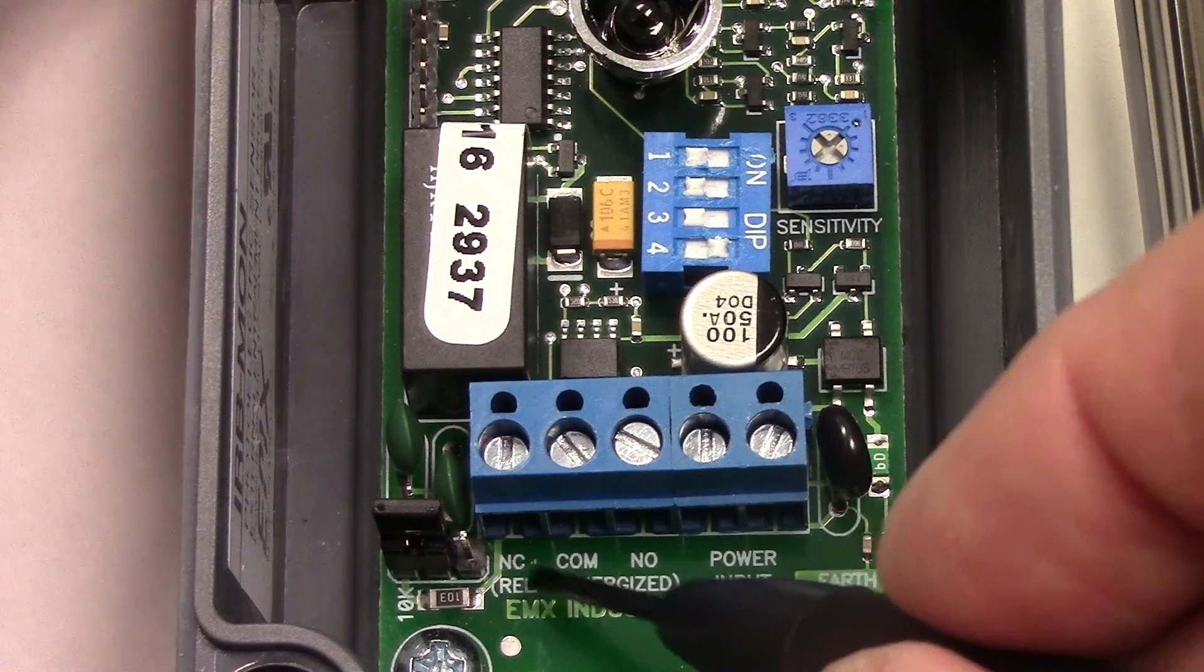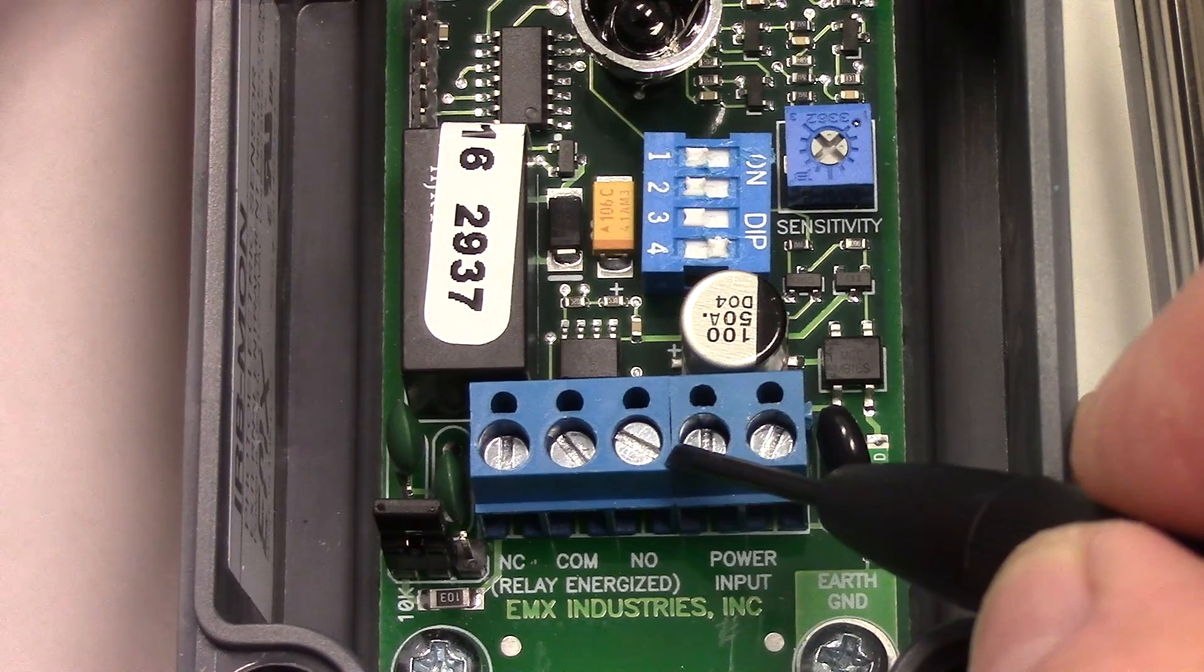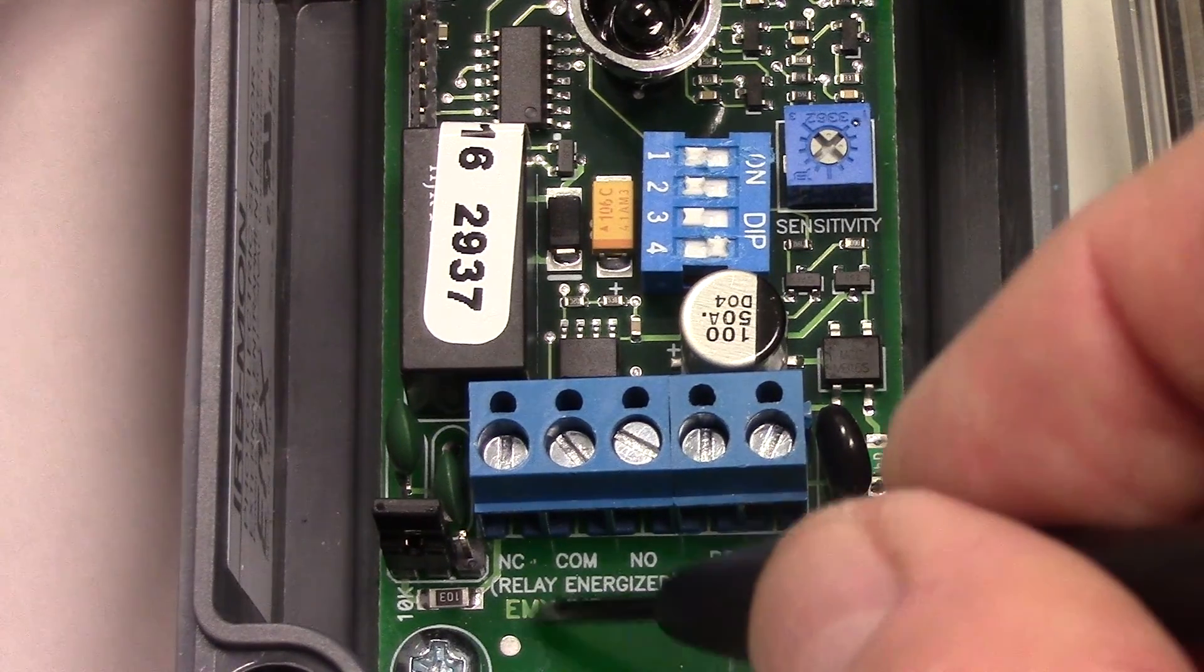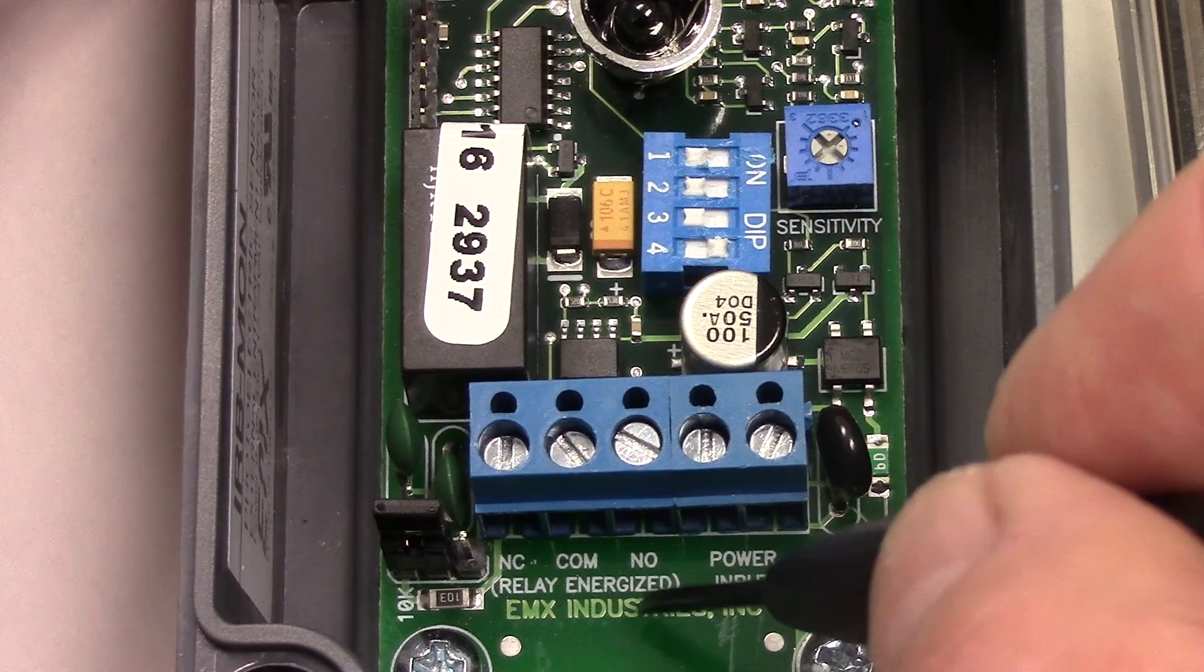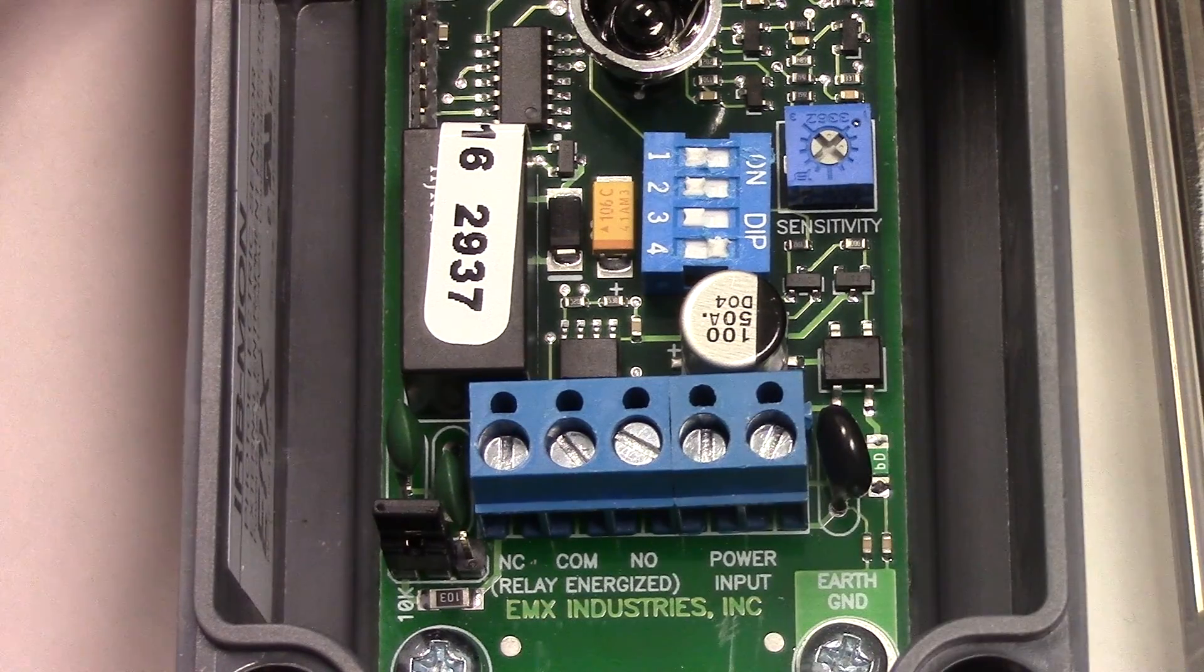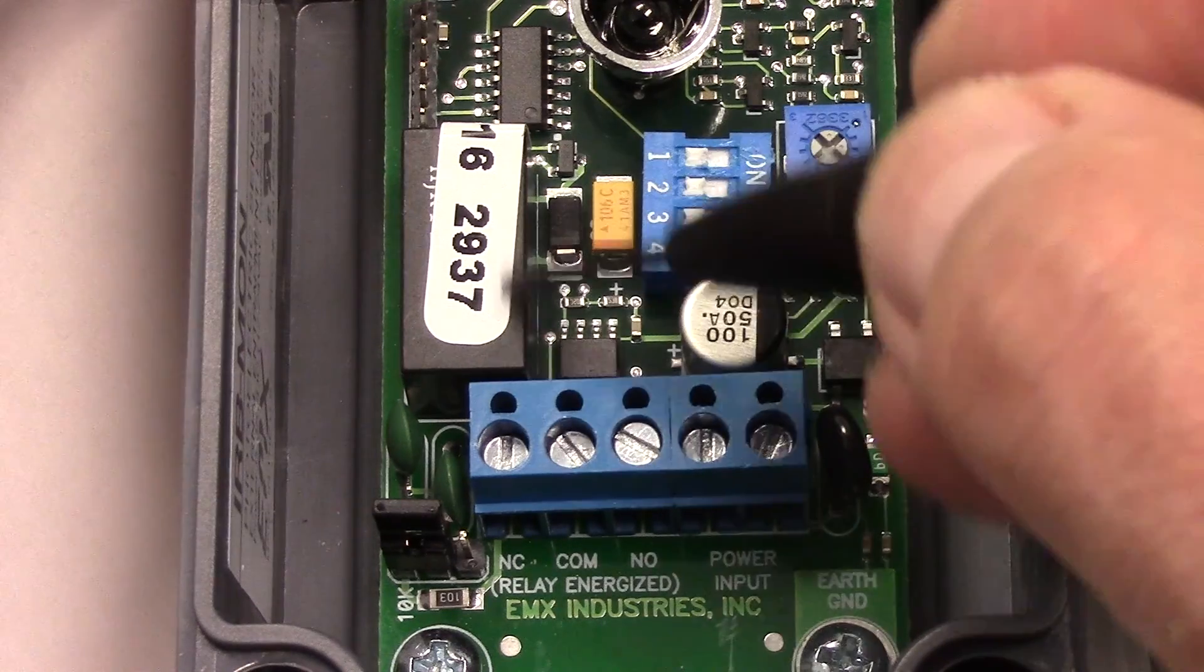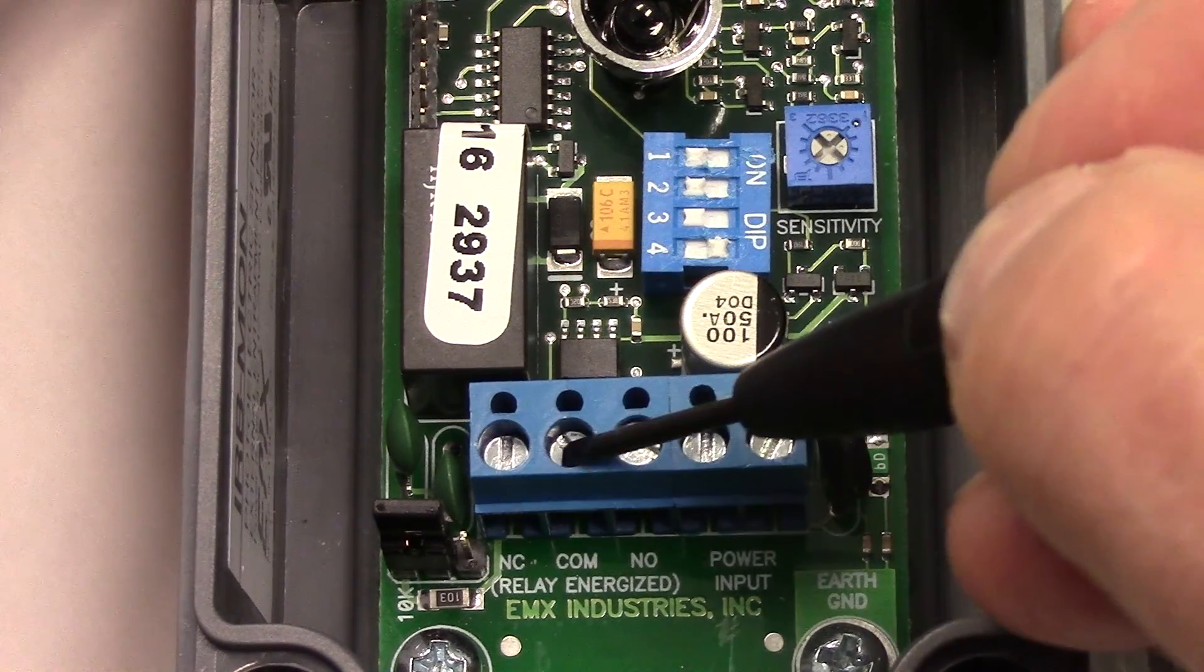The relay contacts are available on three terminals on the terminal strip. We have normally closed, common, and normally open and these are labeled as they would be in the relay energized state. So for the normally closed monitoring we connect to the normally closed and the common.